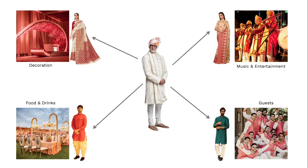The lady wearing the white saree will take care of decoration. The lady on the right will take care of music and entertainment, and the two boys at the bottom are going to take care of guests and food and drinks. Now it is going to be easy for the organizer — whenever he wants to do anything related to decoration he will just call the lady on the left, for music and entertainment the lady on the right, and for food, drinks, or guests he will call the boys. This is exactly how functions work inside programming.